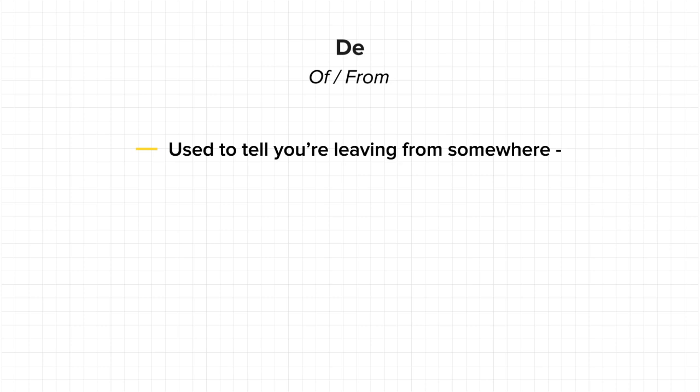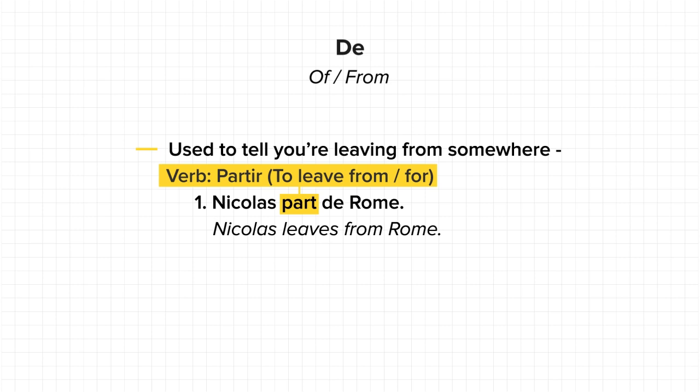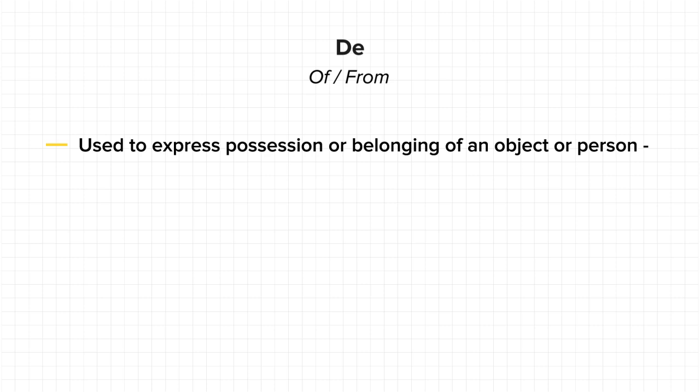'De' can also be used if you want to say that you are leaving from somewhere. 'Nicola part de Rome' — 'Nicola leaves from Rome'. Here, 'part' actually comes from the verb 'partir', which means 'to leave from' or 'to leave for'. Here, it is used as 'to leave from'.